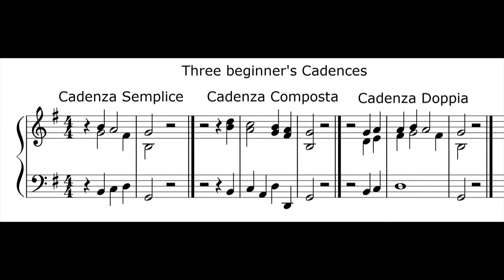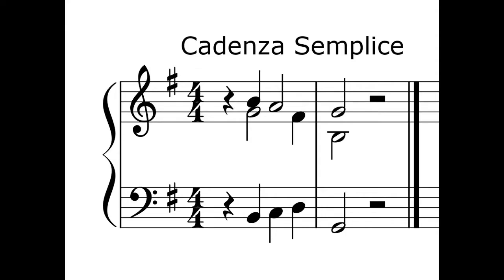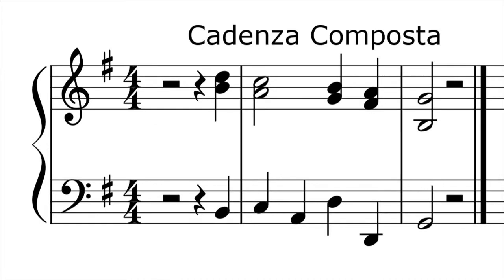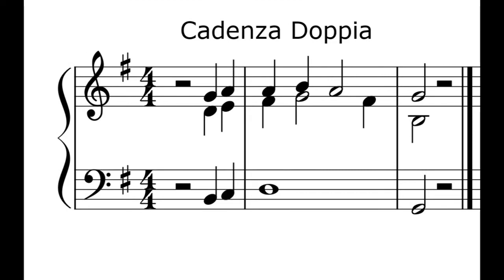There are three basic types of cadence. The first is a simple cadence, cadenza semplici in Italian. The second is a compound cadence, cadenza composta in Italian. The third is a double cadence, cadenza doppia in Italian.